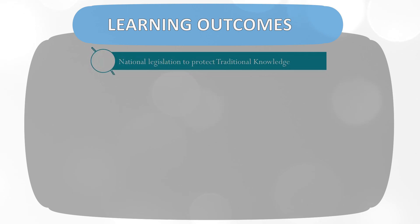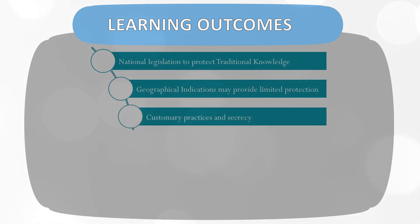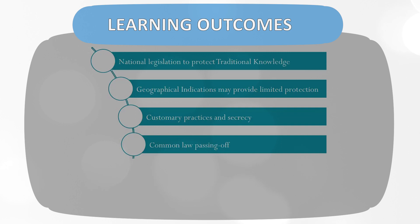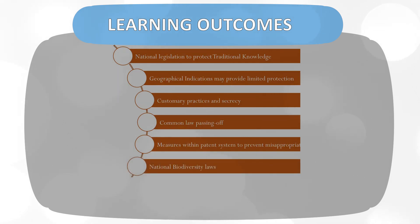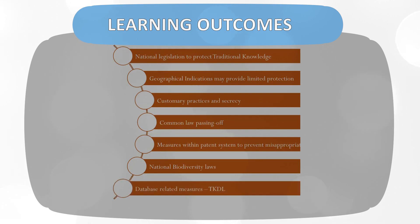We are going to study some legal frameworks — specifically, whether national legislation on protecting traditional knowledge is essential and what steps India has taken. We will also see how other legislations like geographical indications, or common law customary practices relating to secrecy, passing off, can help protect certain aspects of traditional knowledge. There are also measures within the patent system which allow interested parties to prevent misappropriation of traditional knowledge by requiring disclosure. We will also discuss key provisions in India's National Biodiversity Act and measures taken relating to database protection through the Traditional Knowledge Digital Library.